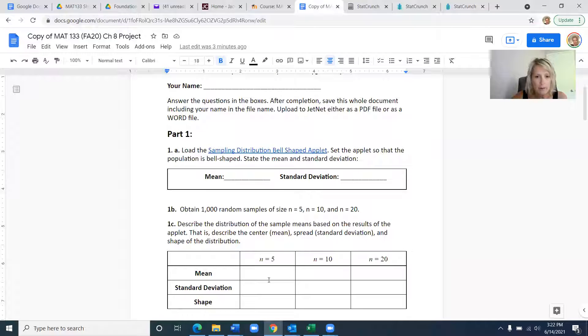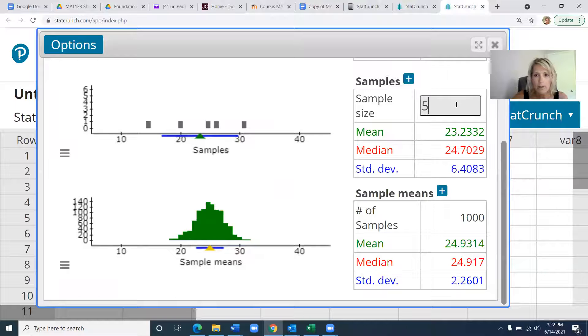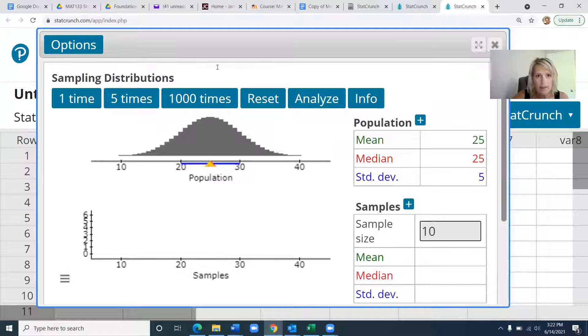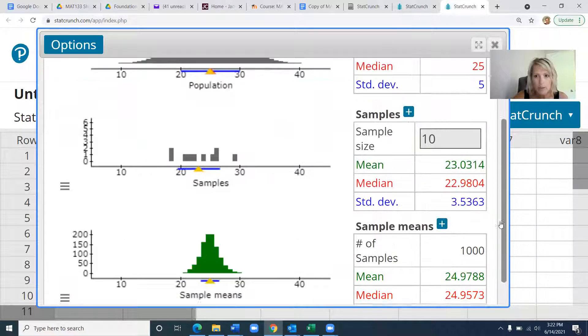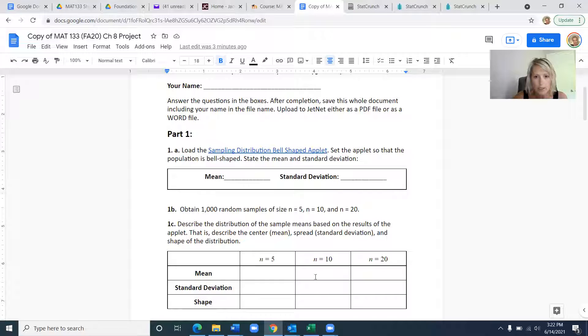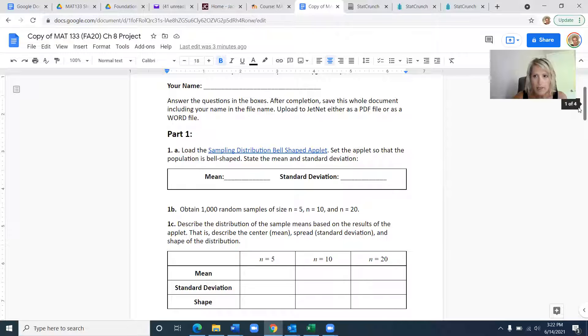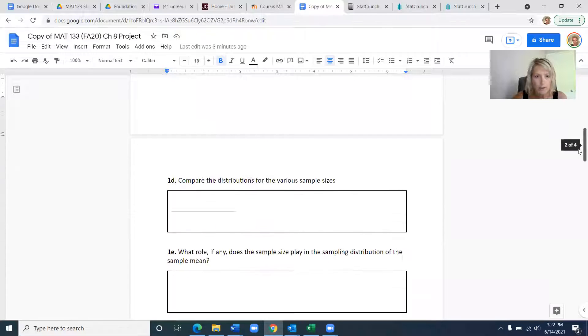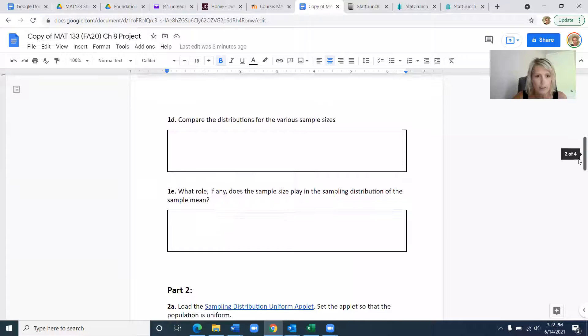I'm going to record that here in this column. Then I'm going to do the same thing with n equals 10. I'm going to go back to StatCrunch and say my sample size is now 10. I have to go back to the top and hit a thousand times, and then it will regenerate. Then you're going to copy down the mean, like I'm circling here, and standard deviation in your table. Then you're going to do that again for n equals 20, and it's asking you to make some observations on part 1d and 1e.